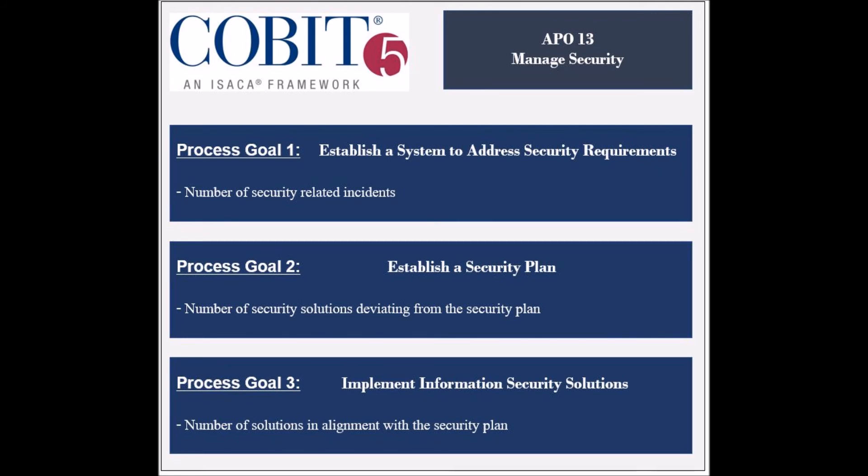The third process goal is to ensure that the information security solutions are implemented and operated, and its achievement is measured by the number of solutions in alignment with the security plan.